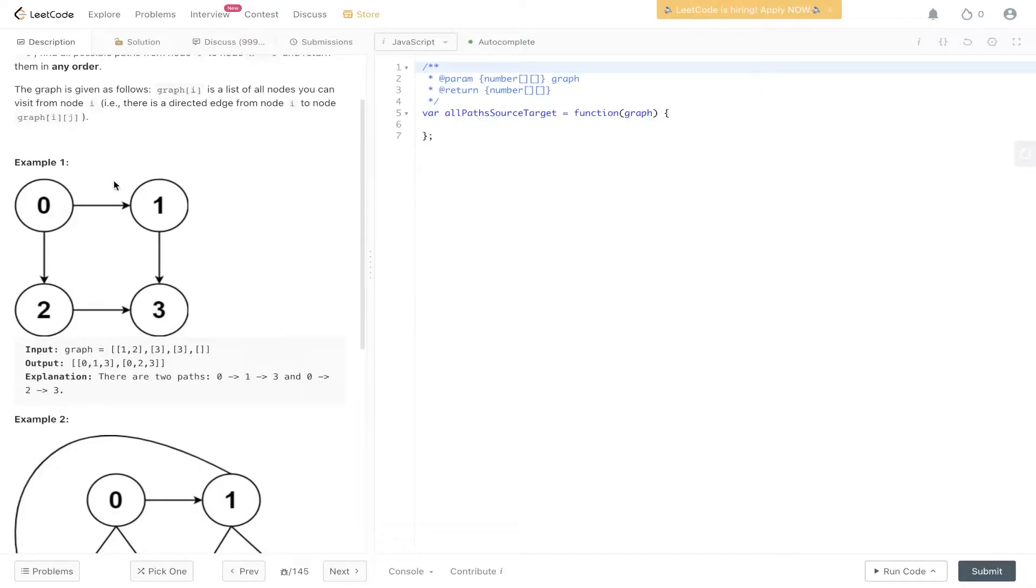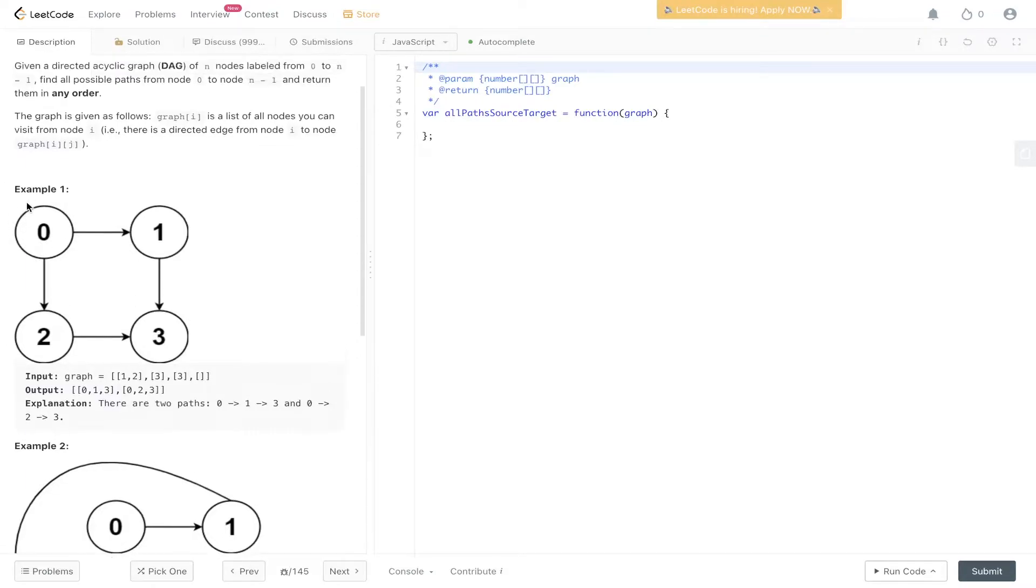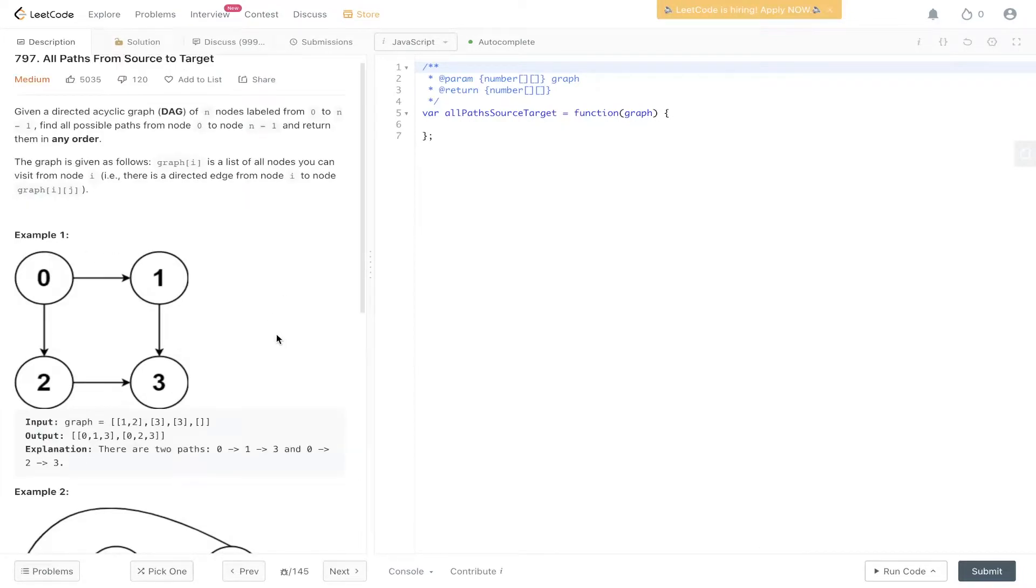So in example one, we have this graph and we want to find out how many paths there are from the starter node which is 0, as stated in the question, 0 to n-1, n-1 is 3. So the amount of paths we have from 0 to 3 is one from 0 to 3, and two from 0, 1, 3. And we need to return the output as an array of arrays containing those paths. It's not just the count of how many paths there are, but to return the actual paths themselves.